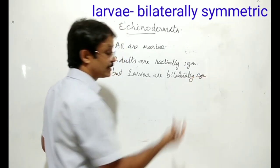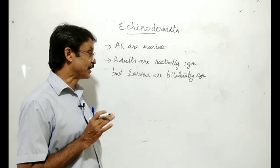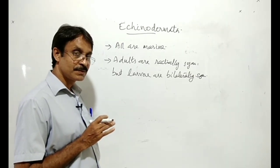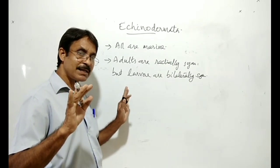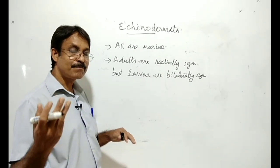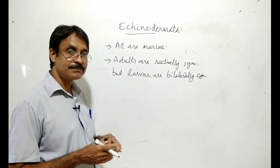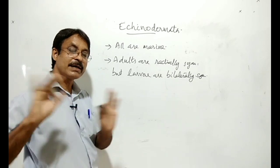This is a very important feature of echinoderms. So now we are discussing the phyla which possess bilateral symmetry from the Platyhelminthes onward. The phyla are bilaterally symmetric.